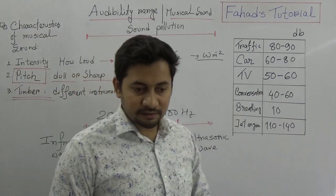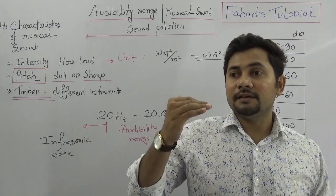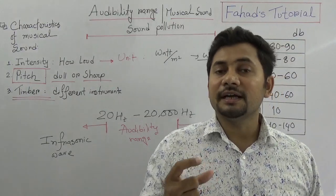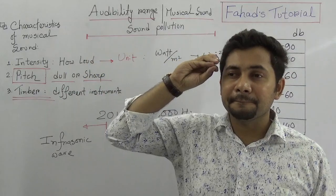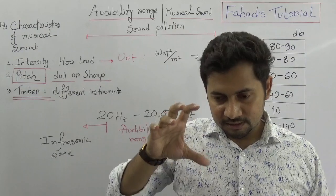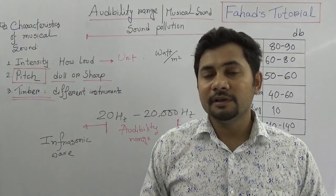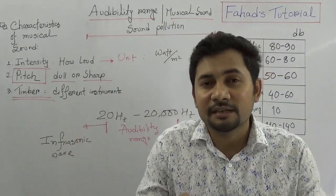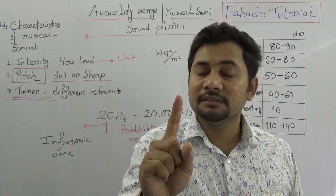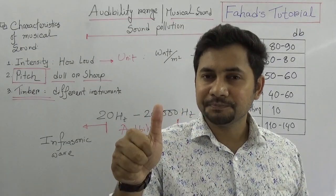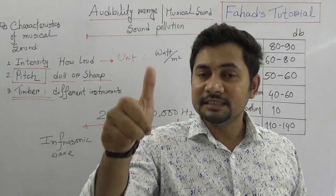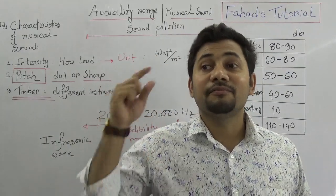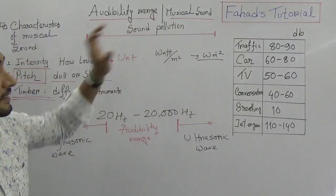Timbre is another characteristic of a musical sound that gives us an idea of which type of musical instrument the wave is coming from. To summarize: musical sound has three characteristics — intensity means how loud it is, pitch means whether at the same intensity it is sharp or dull, and timbre tells us which musical instrument it is coming from. Then there is sound pollution.